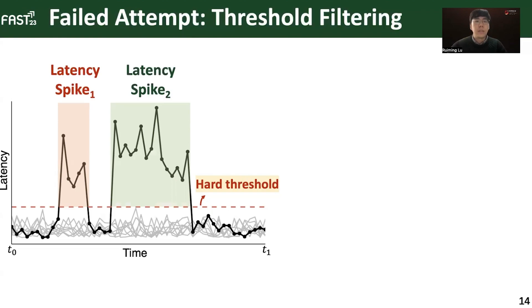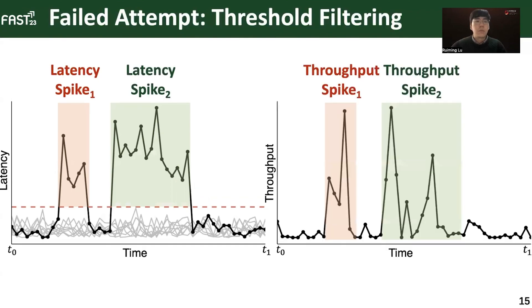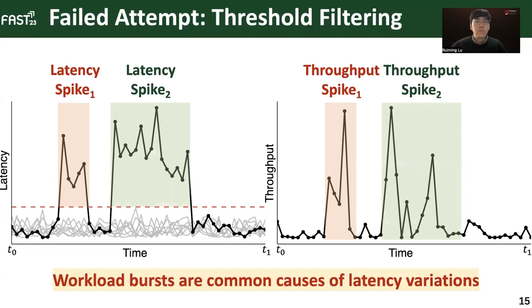However, are these two latency spikes really the artifacts of fail-slow failures? If we cross-validate with the throughput time series, we can see there are two throughput spikes occurring during the exact same time windows. Obviously, it is the temporal workload burst that cause these two spots of latency variations rather than fail-slow failures.